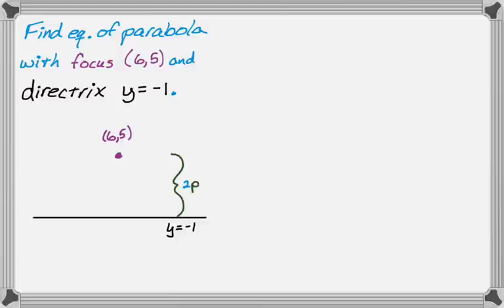Knowing this, I know this distance is 2p. So 2p in this case equals 5 minus negative 1. So 2p equals 6, so p equals 3. Knowing what p is and having this picture, from the point (6, 5) I can move down 3 to the vertex. It has the same x-coordinate, so it's still 6. If I move down 3 from 5, that takes me to 2, so the vertex is (6, 2).